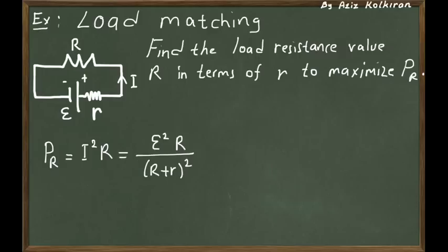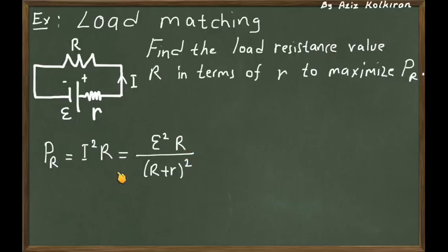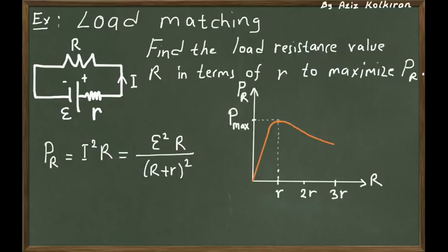So there must be some value of R at which the power is maximum — if you move away from this value in either direction the power decreases. If you have a computer plotter, give this expression for constant epsilon and constant small r, change capital R, and plot P as a function of R.